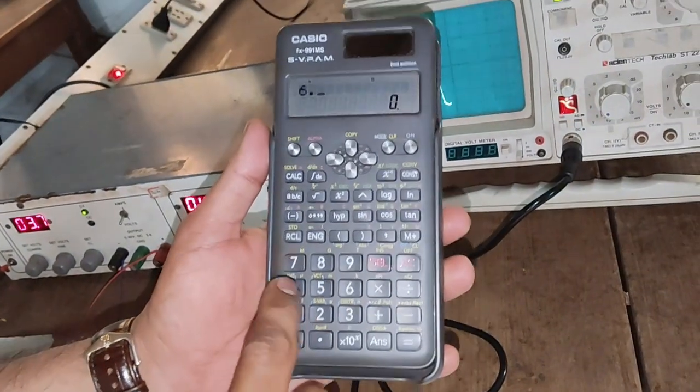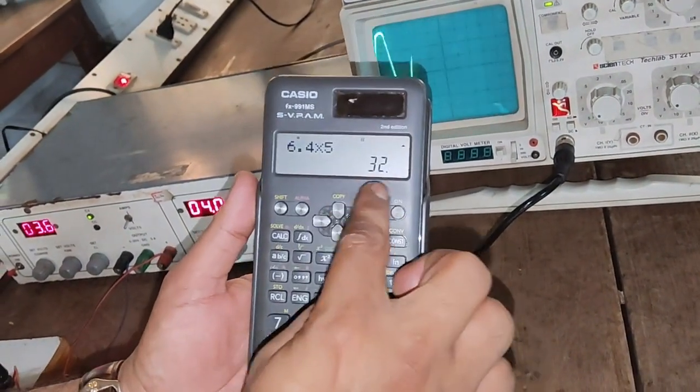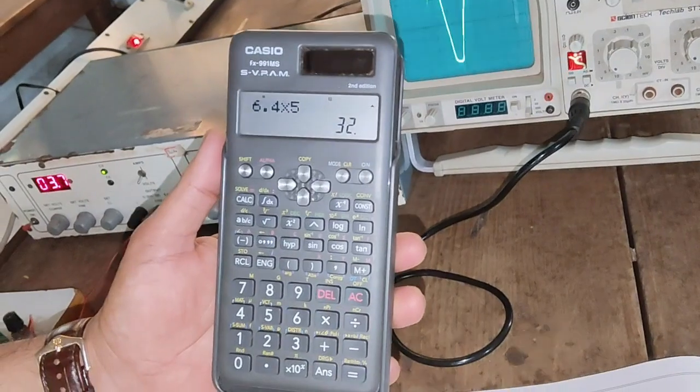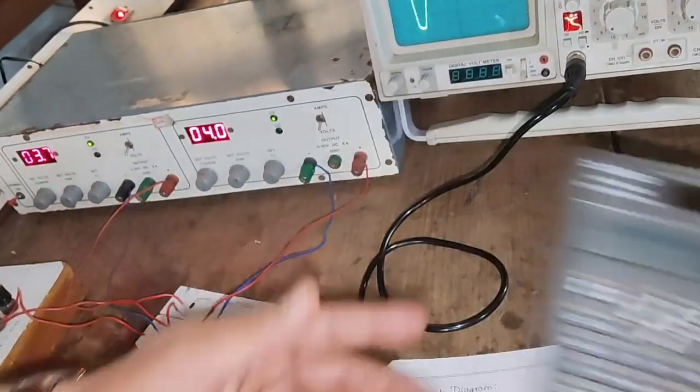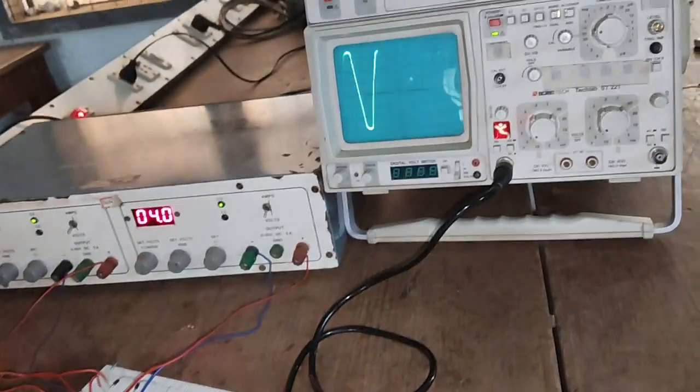6.4 times 5, that turns out to be 32 volts peak-to-peak. Now we will observe the output at resistor R.